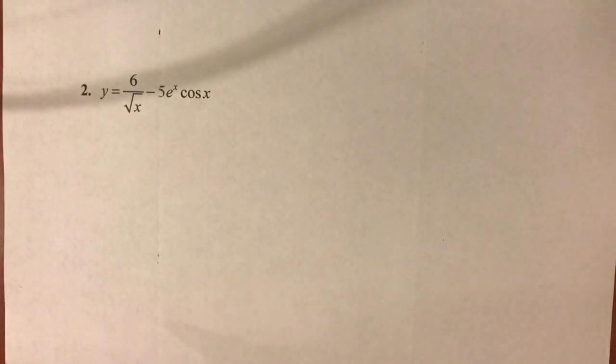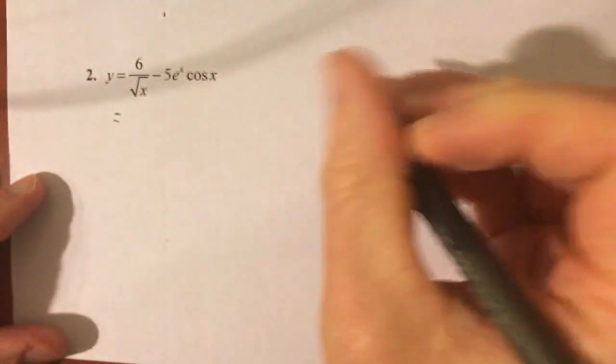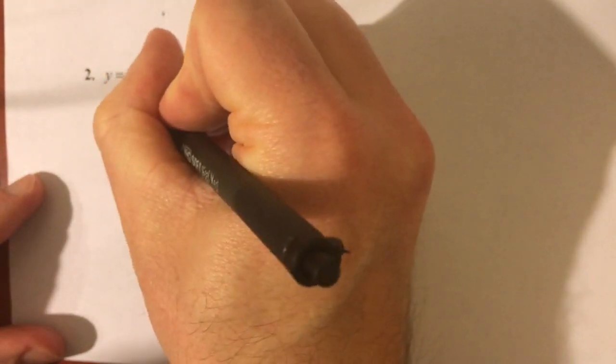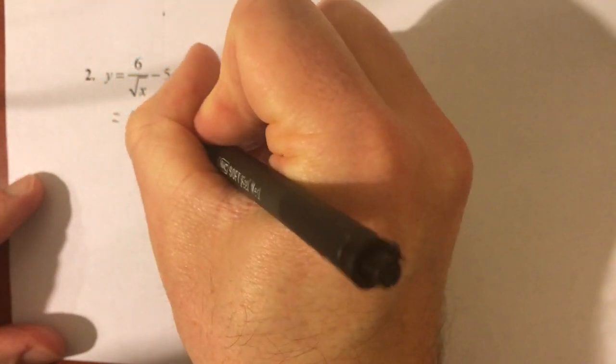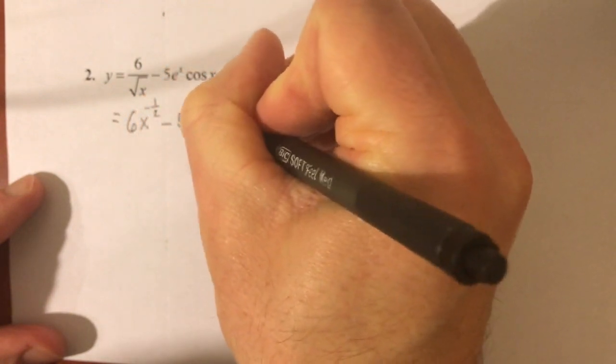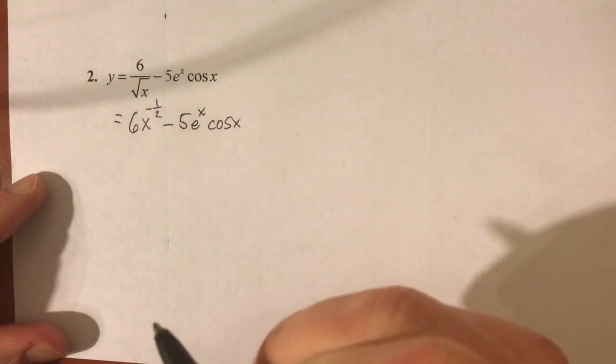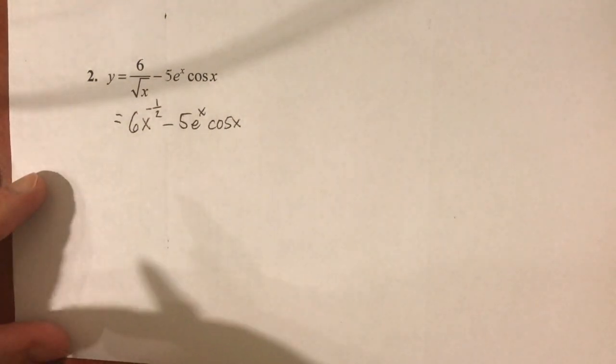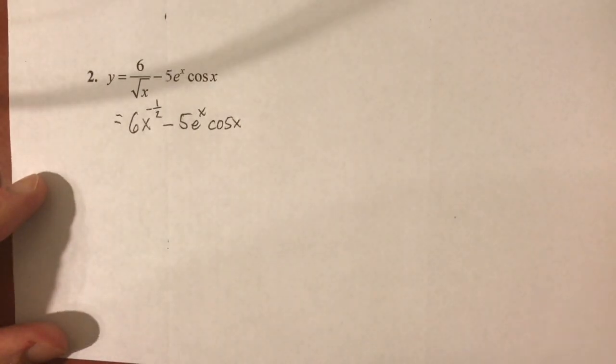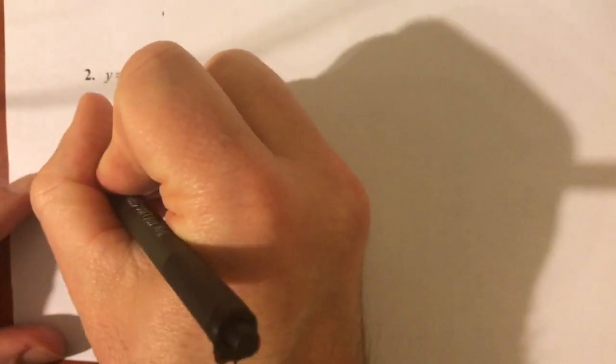So that problem just had a couple little tricks in there, just to hopefully draw these distinctions. But very easy rule to use. Really, the only new thing we did was right there. Okay, so now number 2 here, got a little more in it, got a fraction, got a radical, got a trig expression. I'm going to take a moment and just rewrite this.